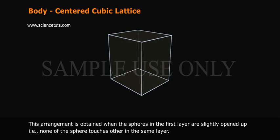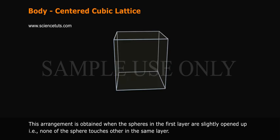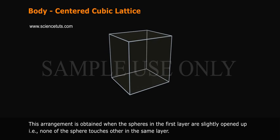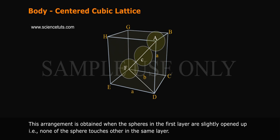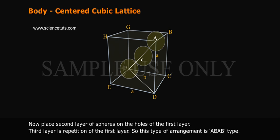Body Centered Cubic Lattice. This arrangement is obtained when the spheres in the first layer are slightly opened up, that is, none of the spheres touches others in the same layer. Now, place the second layer of spheres on the holes of the first layer. Third layer is repetition of the first layer.